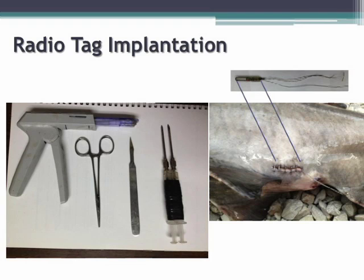For implantation, we made about a three-centimeter incision and slid the radio tag up into the body cavity. Then we used a specialized instrument — essentially a syringe with two needles containing metal rods — to place gold electrode tips into the red muscle tissue along the lateral line. This ensures a consistent anchoring point, with the electrodes measured one centimeter apart for consistent placement.